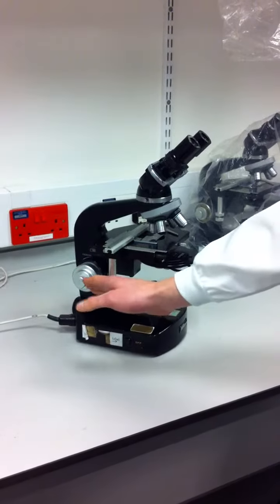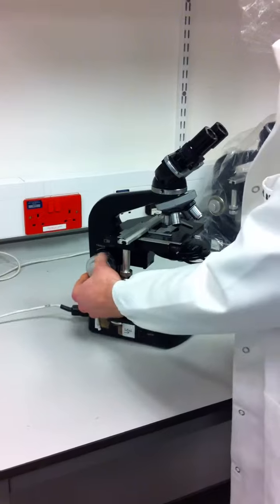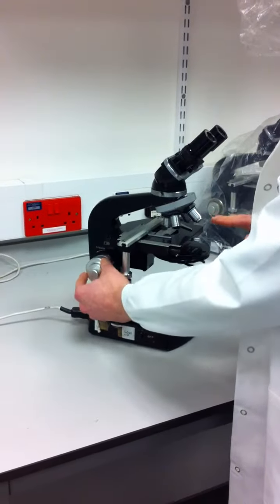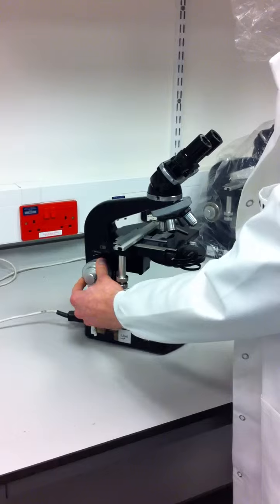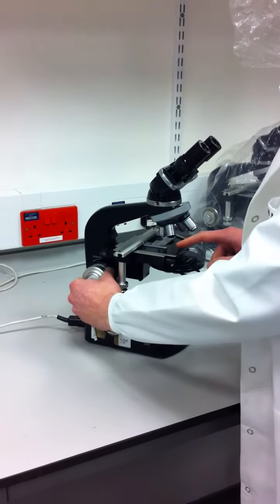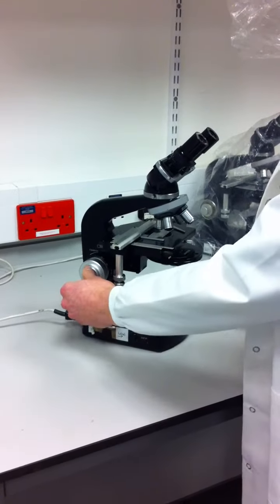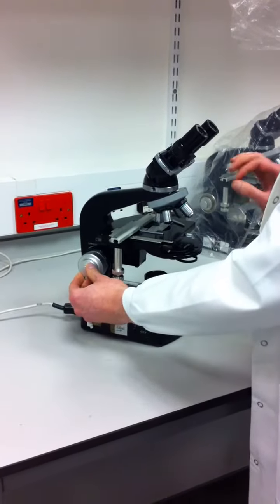Coming back around, these are the adjustment knobs for the microscope. This actually adjusts the image and gets it into focus. This is the coarse adjustment knob, and as you can see, it moves the stage up and down. When you get an image roughly in focus, you use the fine adjustment knobs to get a real crisp image.